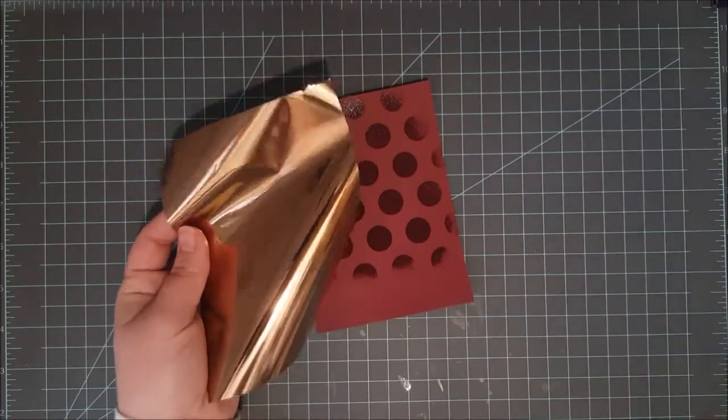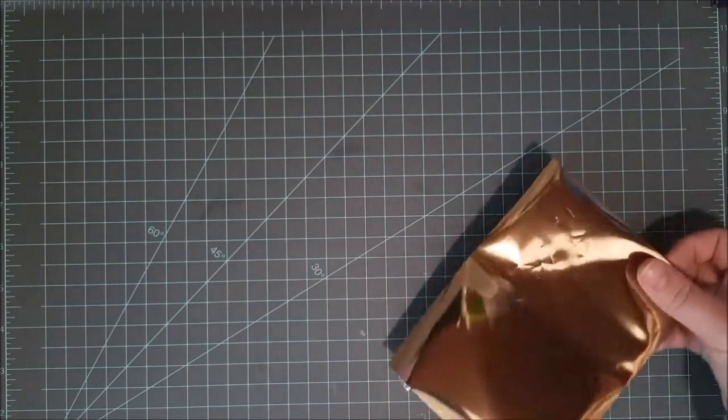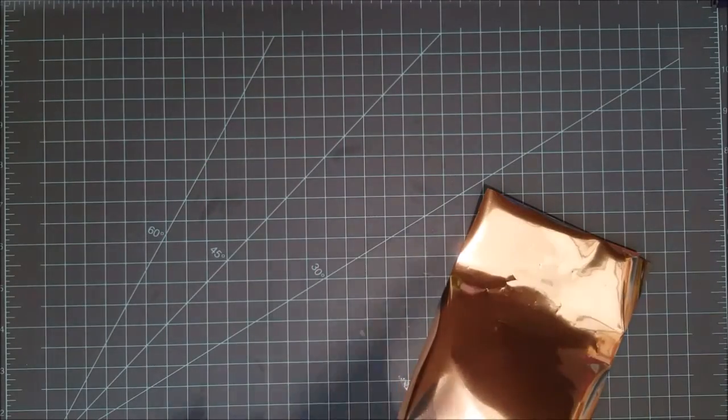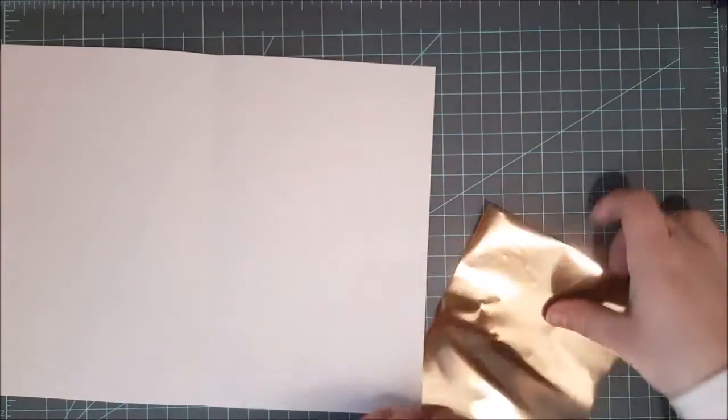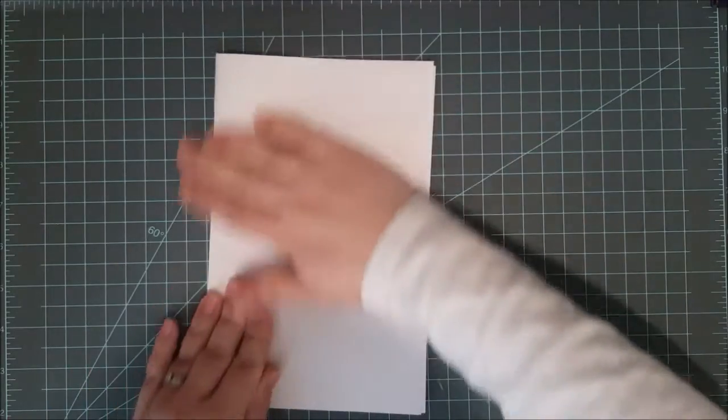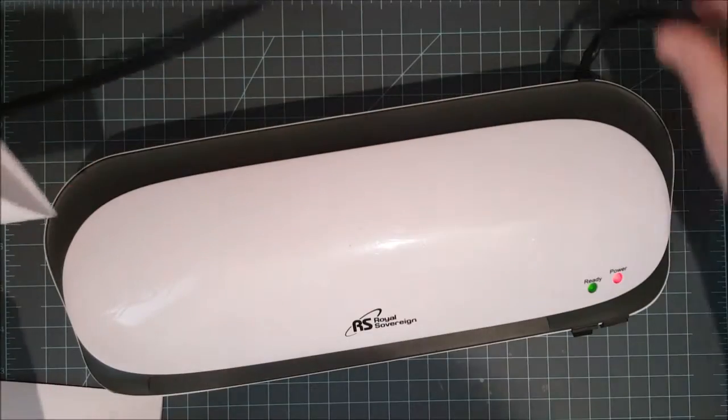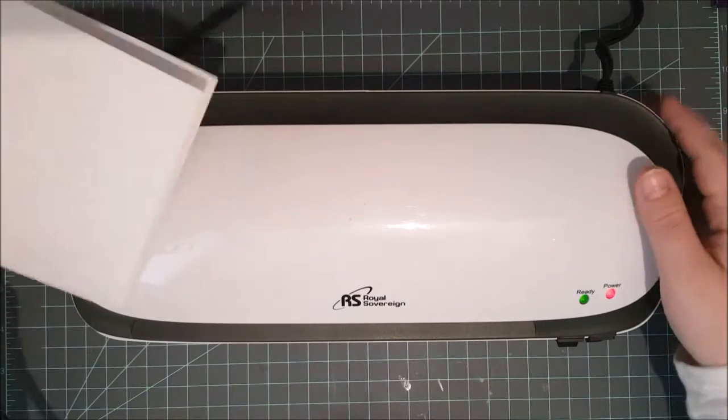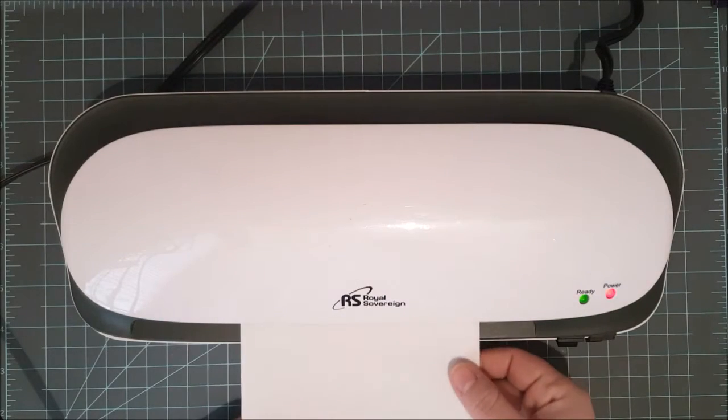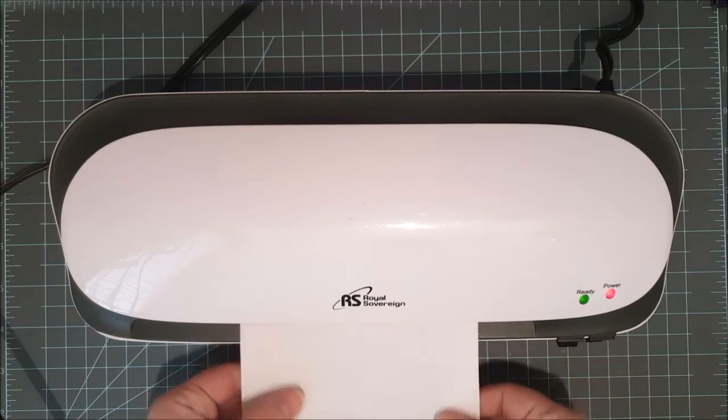Then I'm going to take this deco foil from ThermoWeb and it's this amber rose color very pretty or rose gold I believe it's called. I'll put this over my paper. It's cut down to size already. Then I'll place that inside my carrier sheet. This is just a piece of typing paper folded in half, nothing fancy. I've got my laminator already out ready to go. I've heated it up and I've got it on the highest heat setting. I will take my foil and put it through my laminator.